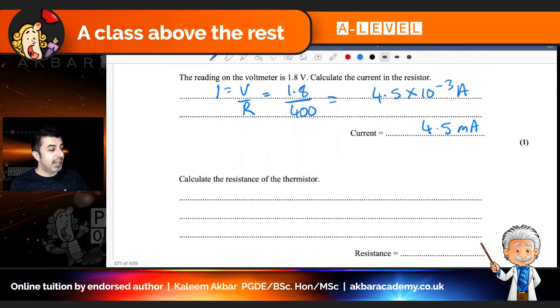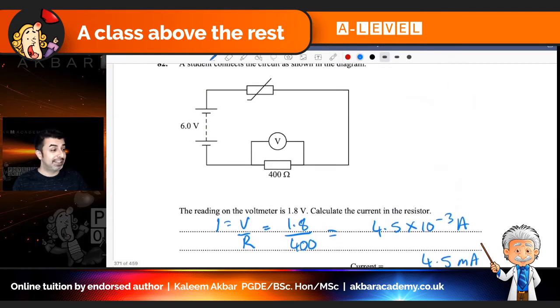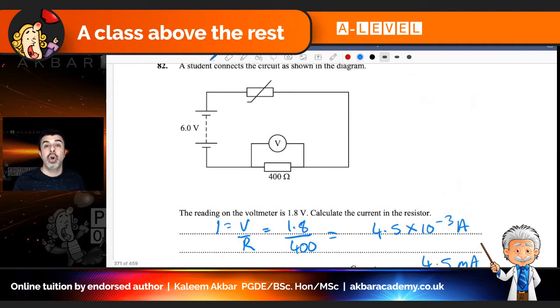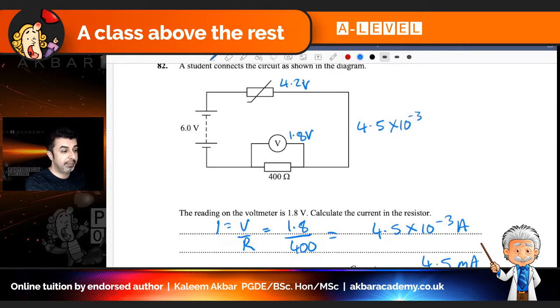And then it says calculate the resistance of the thermistor. Now that we know the current in the fixed resistor, like I said, in series, current is the same at all points. We actually also know the current in the thermistor. We know the current in the entire circuit. And the other thing that we're supposed to know is voltage in a series circuit adds up to the supply. So if this is 1.8 volts right here, it means the thermistor has to have 4.2 volts. And we already know the current in the circuit is 4.5 times 10 to the minus three amps.